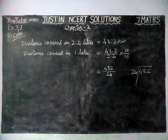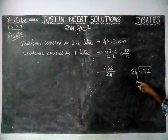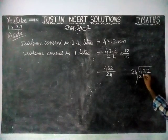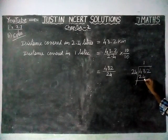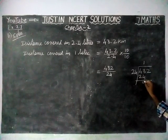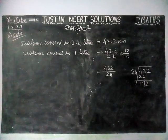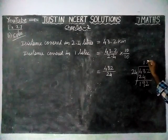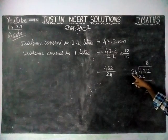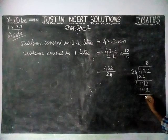Now we are going to divide. In 43, how many 24's do we have? We have only one, because when multiplying by 2 we get 48, but we only have 43. So 1 times 24 is 24. Remaining: 13 minus 4 is 9, and 3 minus 2 is 1, giving 19. We bring down the next number, 2. Now, 8 fours are 32, remaining 3. 8 twos are 16, and 16 plus 3 is 19. We write 2, giving 192, remaining is 0.